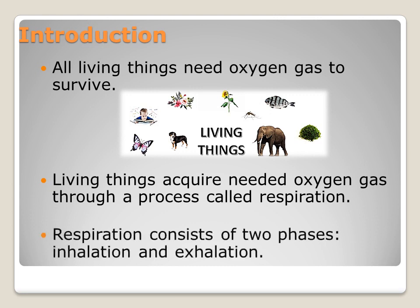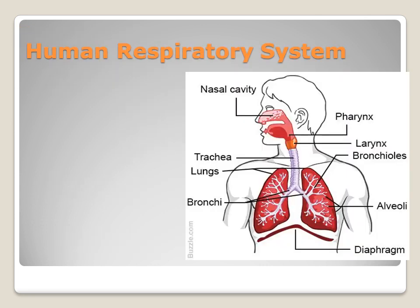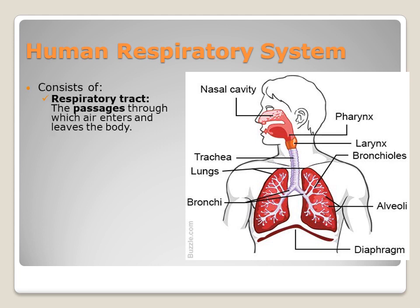Respiration consists of two phases, which are inhalation and exhalation. To start our lesson, we must recall some information about the human respiratory system. It is made up of two parts. The first part is called the respiratory tract, which consists of passages through which air enters and leaves your body. It is made up of two nasal cavities located inside your nose, and the pharynx, which is a common pathway between your digestive system and your respiratory one.